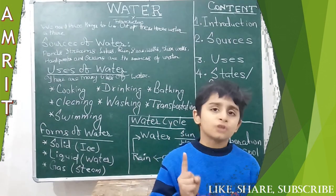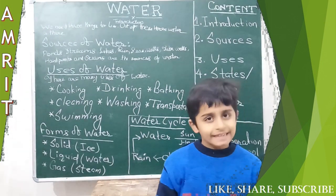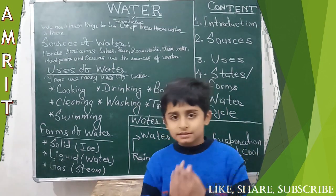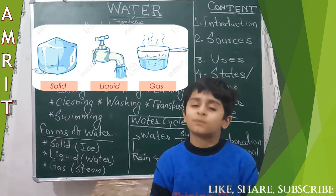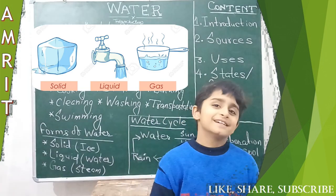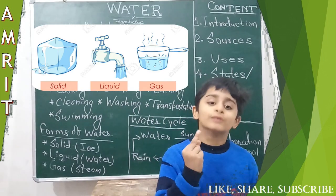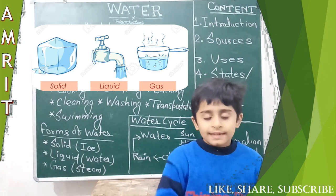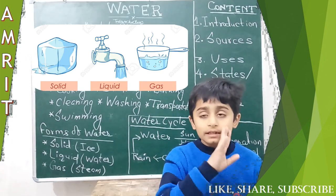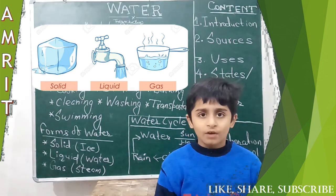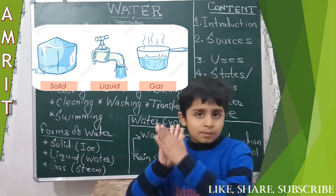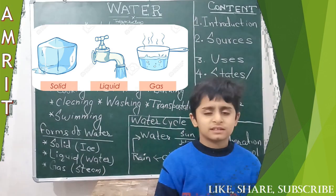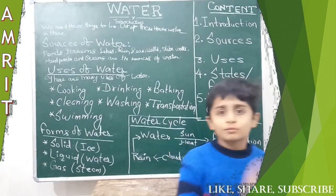Now we go to the states and forms. Water exists in three forms. The first form is solid — that is ice. The second form is liquid, which is the main form of water we use every day. The third form is gas — it is water vapor. An example of water vapor is steam.